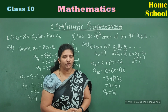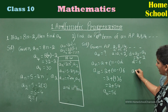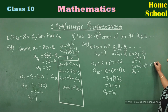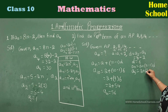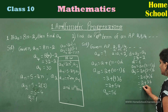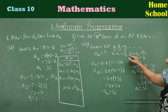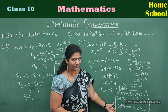They asked only the 10th term, but let's also find the 5th term. a₅ = a + (n − 1) × d. I already know a = 2 and d = 6, so: a₅ = 2 + (5 − 1) × 6 = 2 + 4 × 6 = 2 + 24 = 26. Therefore the fifth term value is 26. If you know a and d, you can find any term.